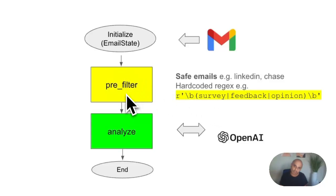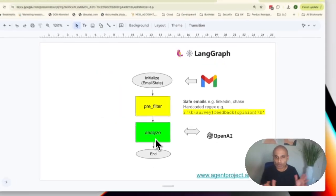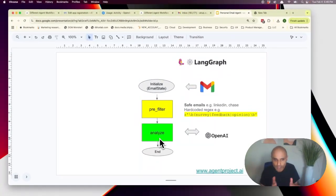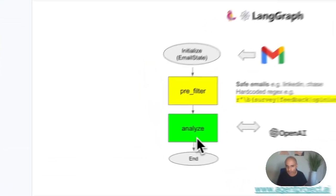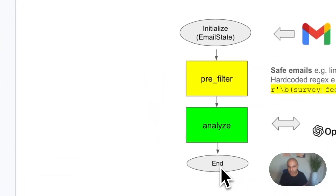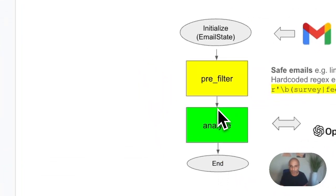After the pre-filter stage, I go ahead and analyze the remaining emails. For those I don't know what to do with, I ask OpenAI to take care of it. Then the workflow is done. Let me go straight into the code.